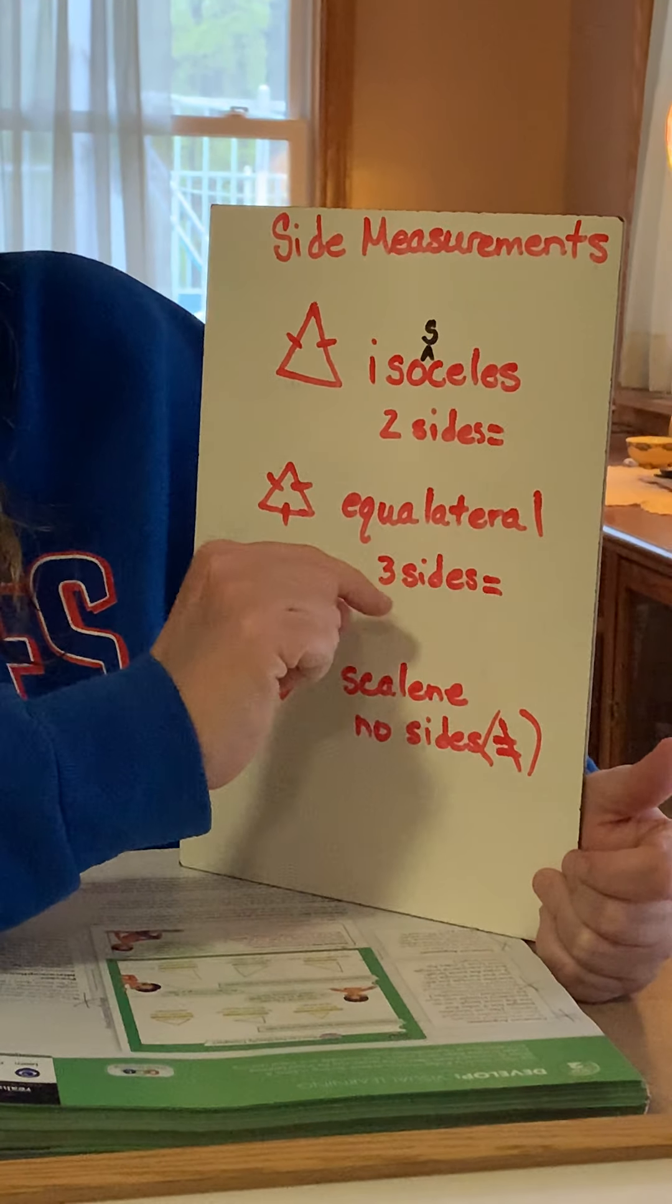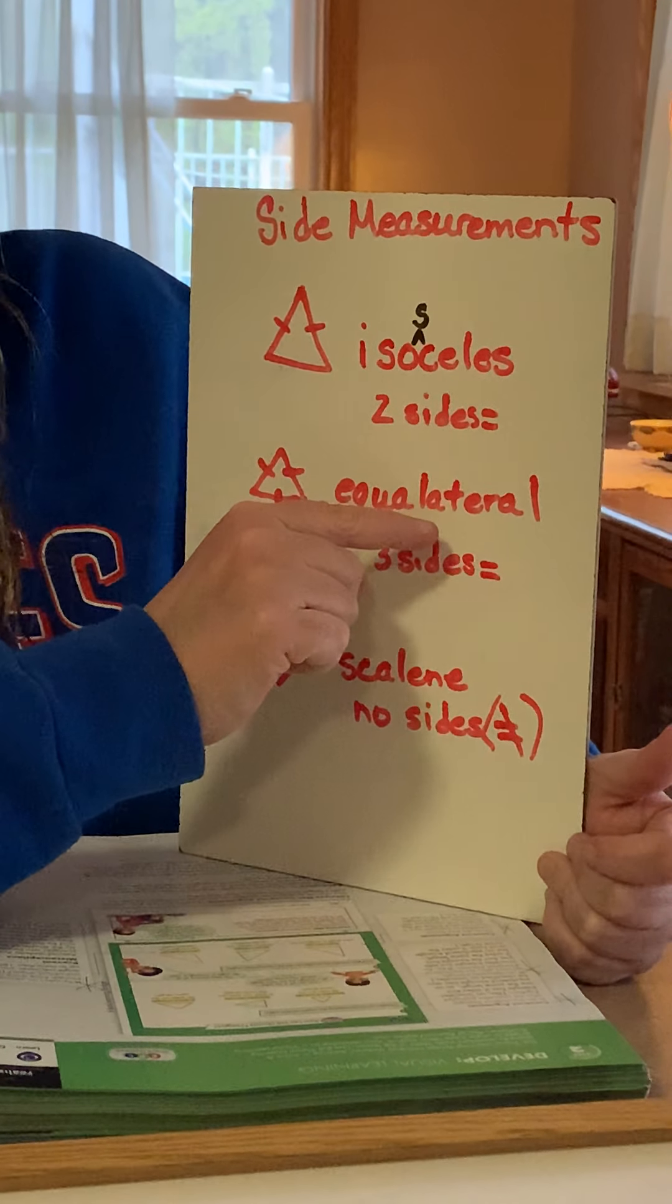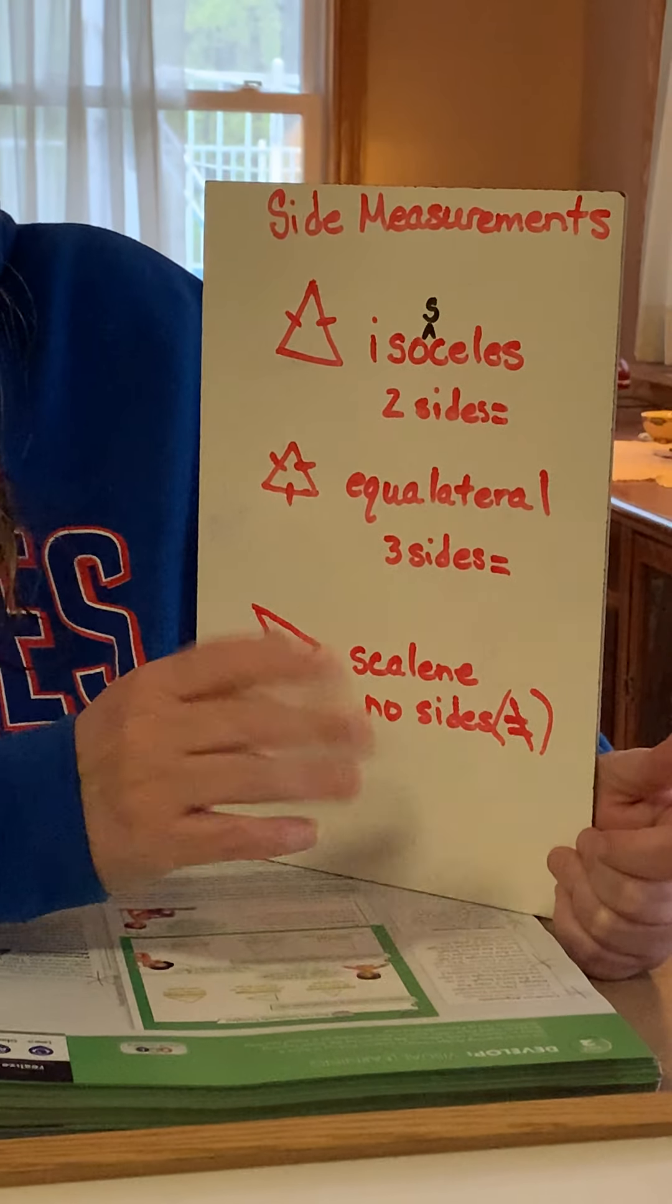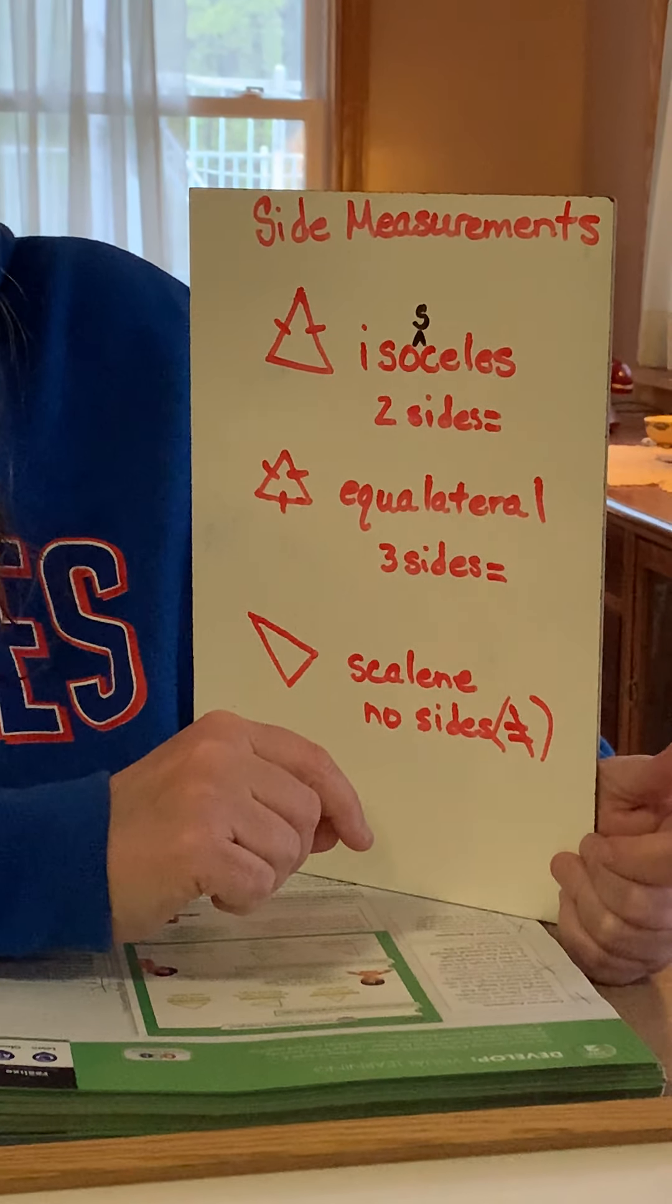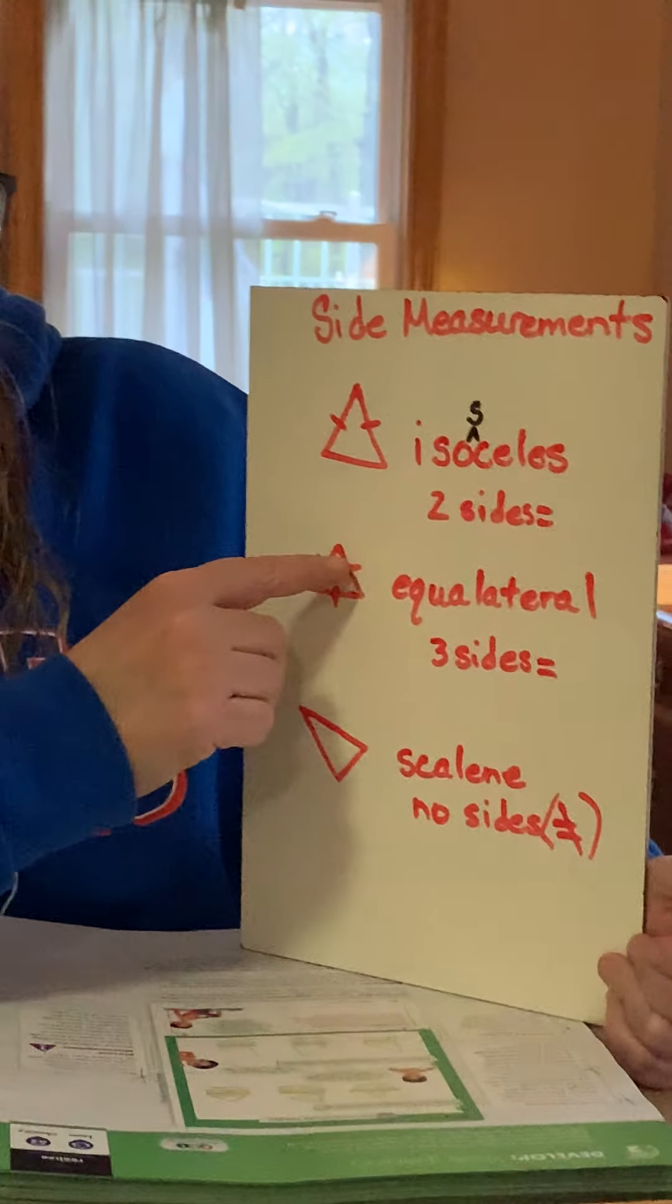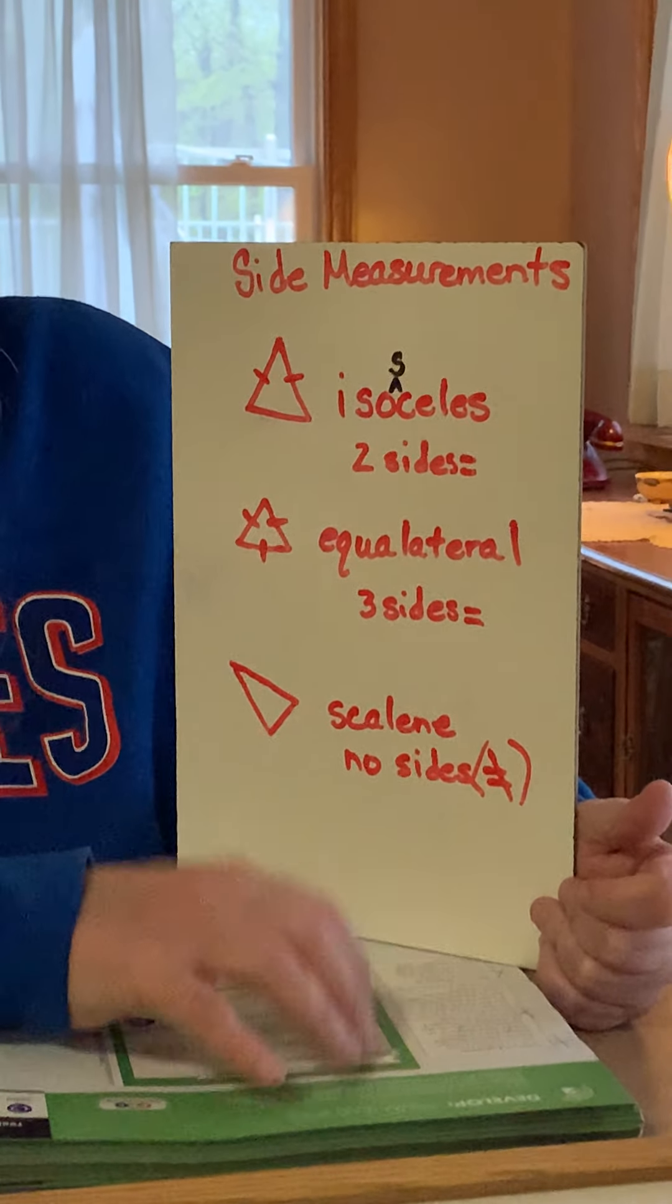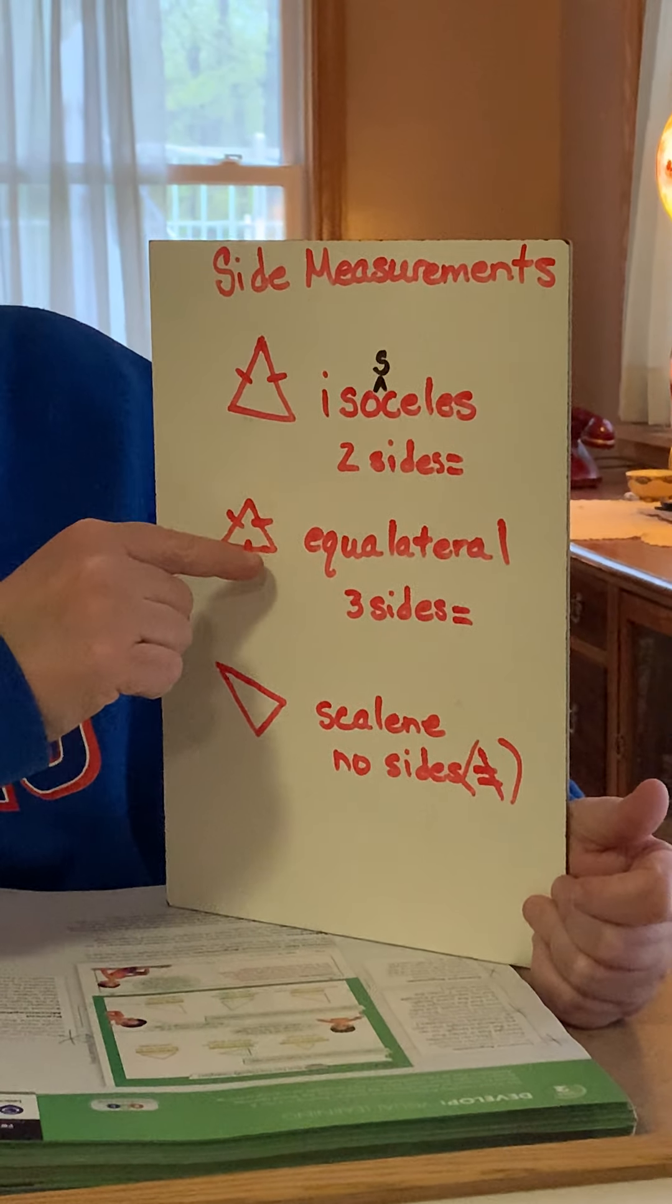An equilateral triangle, which has the word equal in it, hopefully that'll make you think that it's the same. All three sides have to be the same. Also, just so you can have a reference, three angles will also have the same measurement. Each one of those measurements will be 60 degrees. It'll be 60, 60, 60, because 60 plus 60 plus 60 is 180. Equilateral triangles have to have three sides.